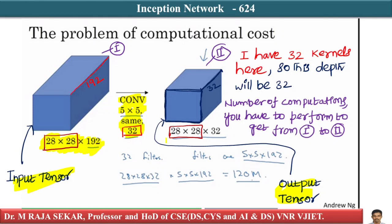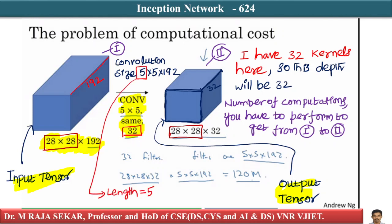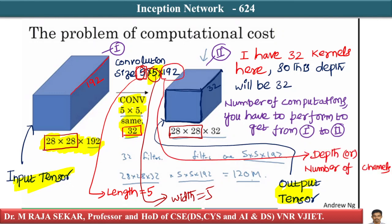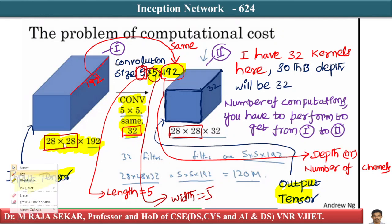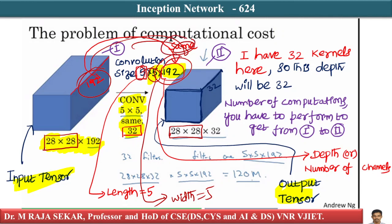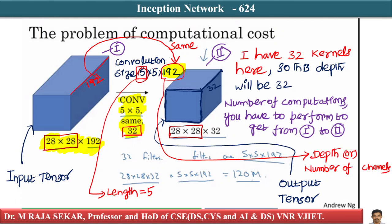My convolution kernel has length 5, width 5, and depth 192. The first 5 indicates length, the second 5 indicates width, and 192 is the channel depth. This 192 in the kernel matches the 192 channel depth of the input — these two numbers must match.